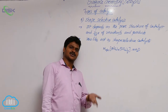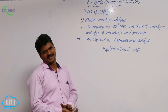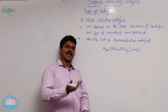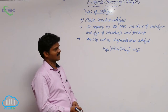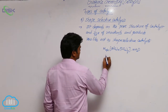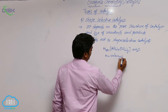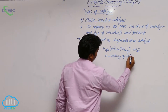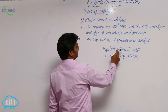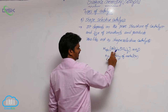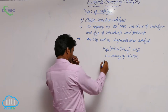Zeolites may be naturally occurring or may be artificially made — that means manmade. In this formula, n is the valency of metal M; x and y are the number of AlO2 groups and SiO2 groups respectively.